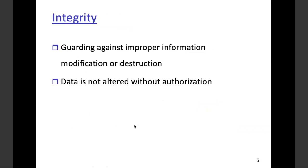What is integrity? Integrity means we are not altering the information. As we send it from one person to another, it remains as is — there is no alteration. If you've heard of Chinese Whisper: if I tell you something and you tell further, the information keeps changing. That shouldn't be the case. The moment information changes, integrity is lost. Data is not altered without authorization.